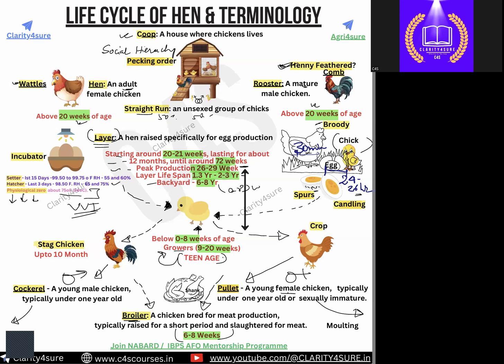A few more terms: molting is the shedding of feathers, used in the context of poultry. Crop is the portion of the bird's digestive system where it stores food before it gets digested. Straight chicken is another terminology used for male chicken up to 10 months of age — you may find this term in many books.